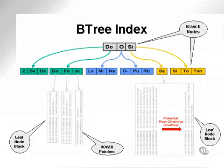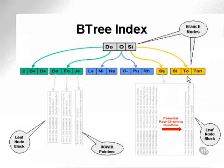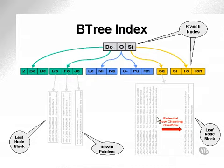Here's a picture of a B-tree index — a very simplified picture. I took one of my tables, took the names from the table, and divided them up into how a semi-balanced B-tree would look. As you can see, we have three levels: the top level, which is a branch node level; the second level, also a branch node level; and the third level, which is a leaf node level, containing all the actual index values in blocks.